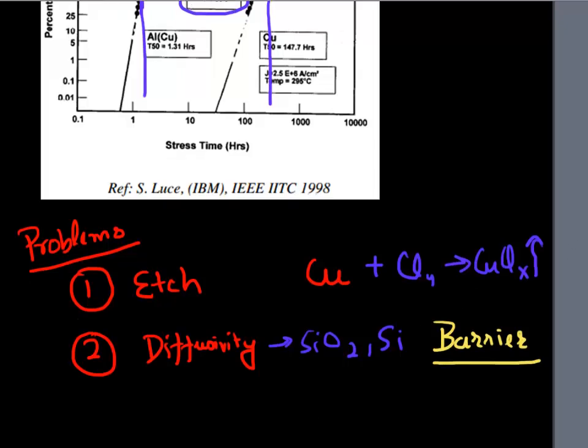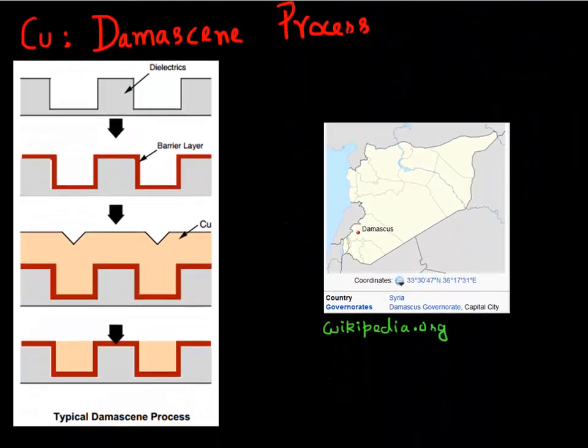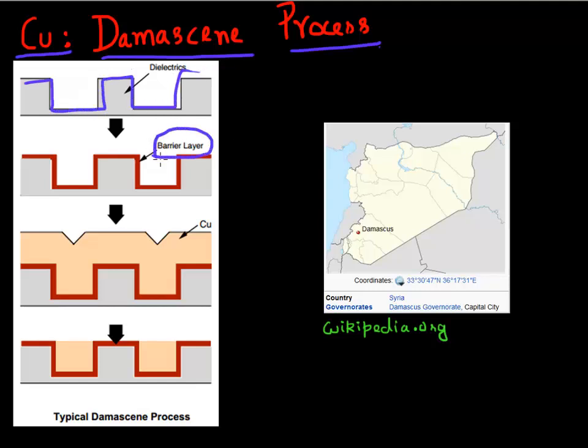So the process flow which was developed for depositing copper is known as damascene process flow. And because of this limitations with copper technology that you cannot etch copper, or you cannot deposit it directly on oxide. What was done is that this process flow, which is known as damascene process flow, was developed. And what it involves is you essentially etch the pattern that you want for your copper lines. You etch this pattern where you want these copper lines. And then you deposit this barrier there, which prevents your copper from diffusing into your oxide. And these barrier there are typically either titanium nitride or tantalum nitride, which are amorphous materials, which prevent copper from diffusing into your oxide.